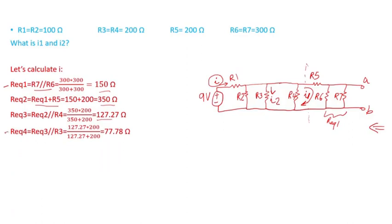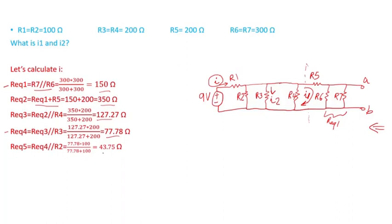I keep finding the equivalent — R equivalent 4 is R equivalent 3 in parallel with R3, which gives 77.78 ohms. Finally, R equivalent 4 in parallel with R2 gives R equivalent 5 equal to 43.75 ohms.